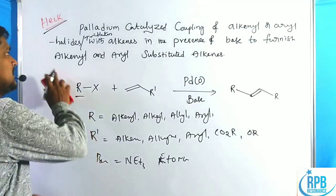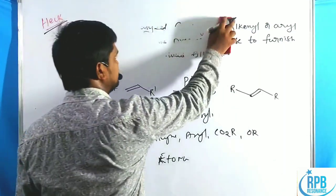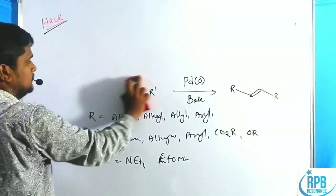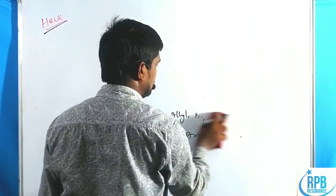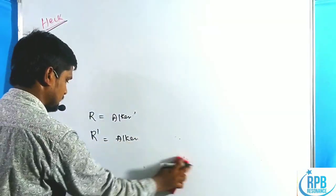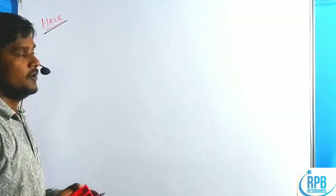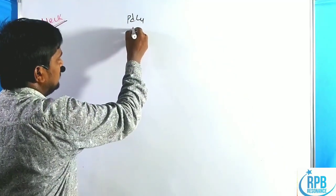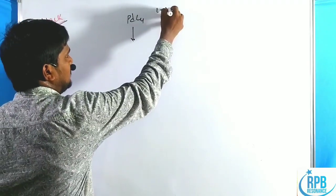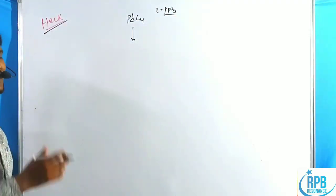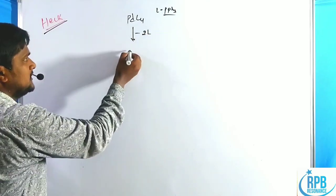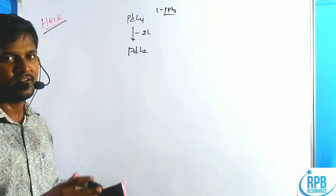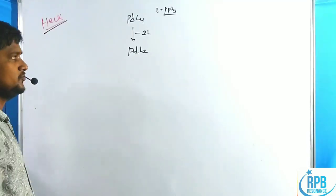Now let us discuss the catalytic mechanism of the Heck cross-coupling reaction. The catalyst is palladium L₄, where L is the favorite ligand PPh₃. Elimination of two ligands gives palladium L₂, which favors the zero oxidation state.